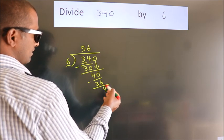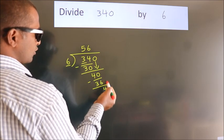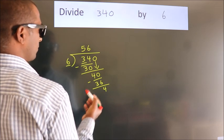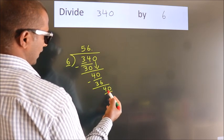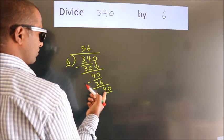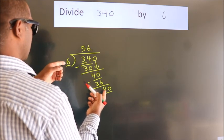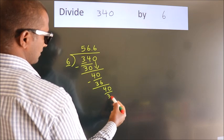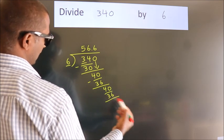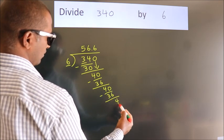After this, no more numbers to bring down. So what we do is put a dot and take 0, making 40. A number close to 40 in the sixth table is 6 times 6 equals 36. Now we subtract. We get 4.